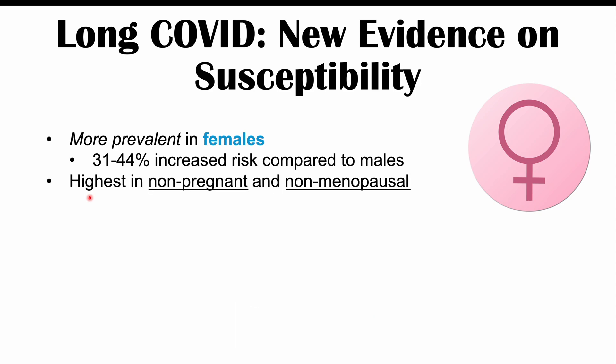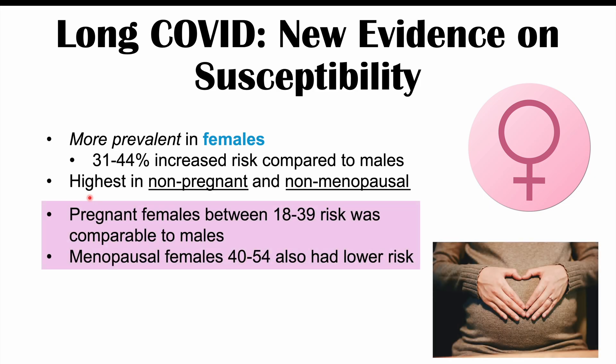And in fact, the rates of Long COVID and the risk for getting Long COVID is the highest in young biological females, so those who are non-pregnant and non-menopausal. So this is in contrast to pregnant females and menopausal females. Pregnant females between ages of 18 to 39, their risk was actually comparable to males. So pregnancy seems to reduce the risk of Long COVID. And menopausal females had a lower risk as well, although perhaps not as low as age-related males.